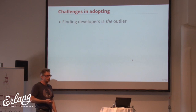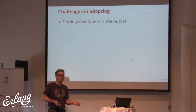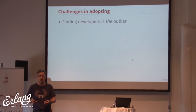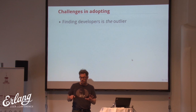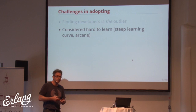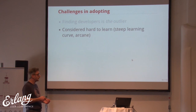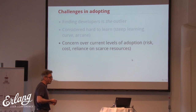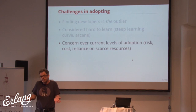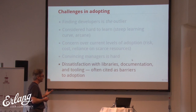Challenges in adopting: finding developers is the outlier. People are concerned about committing to a technology when they can't find developers. You're going to bet your company on something you can't execute on? It's considered hard to learn, with a steep learning curve. It's arcane — someone used the term 'inside baseball,' meaning it's part of a closed group, difficult to understand without a large investment in learning. There's concern over current adoption levels. Convincing management is hard. And there's strong dissatisfaction with libraries, documentation, and tooling, often cited as barriers to adoption.